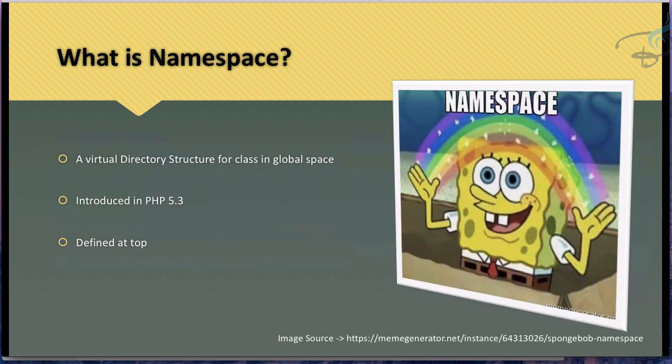A namespace is a virtual directory you create for your project. It has no relation with the real folder structure you use to manage your files. You can have two files with the same class name and they can coexist because you have created different namespaces for them. This namespace system was introduced in PHP 5.3 and is used just below the PHP opening tag, above everything else.